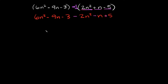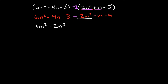Now the next thing you're going to do is combine like terms. If you want, you can move the terms around so they're sitting next to their like terms. For example, here we have 6n squared — which one of these terms can we combine with 6n squared? Well, that would be this negative 2n squared.